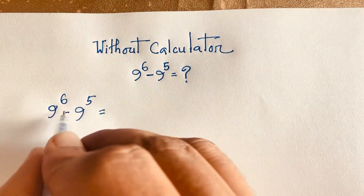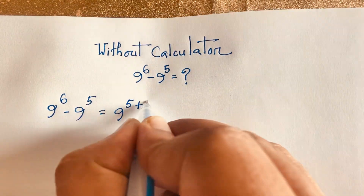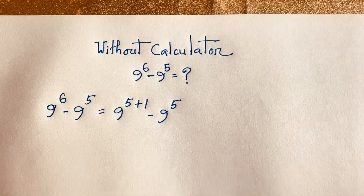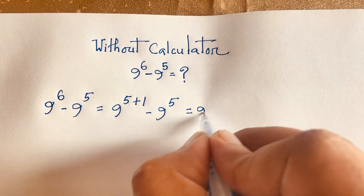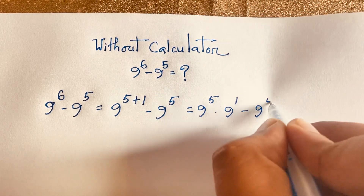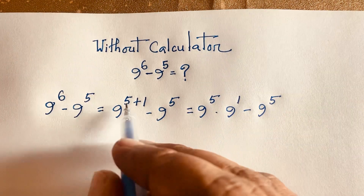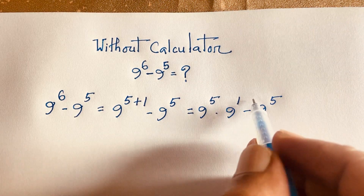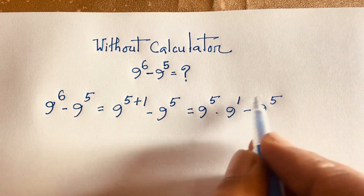Now at this moment, 9 to the power 6 can be written as 9 to the power 5 plus 1, minus 9 to the power 5. Then I can say it is 9 to the power 5 times 9 to the power 1, minus 9 to the power 5. According to the exponential law, we know that a to the power (n plus m) equals a to the power n times a to the power m. According to this law, it will be 9 to the power 5 times 9 to the power 1.